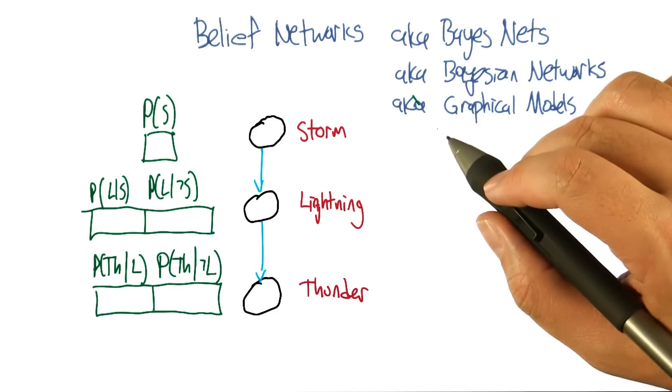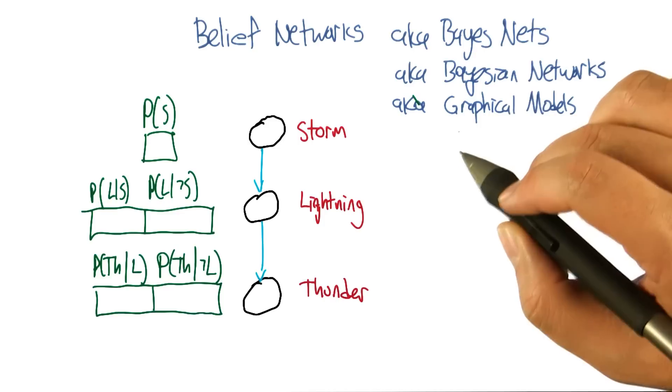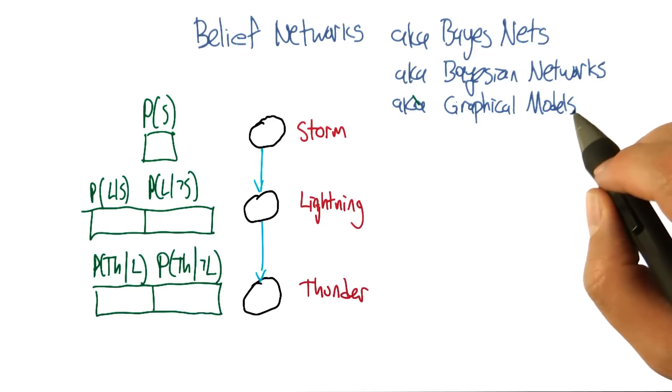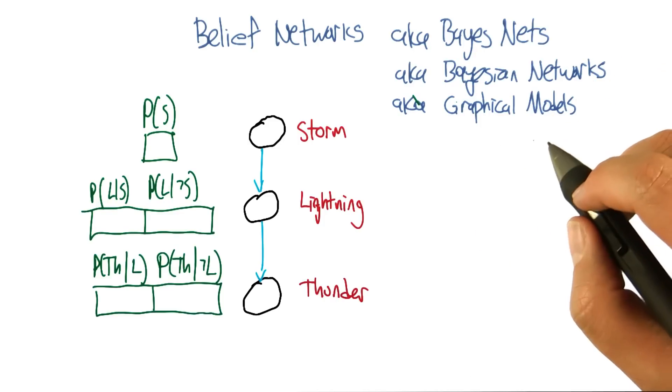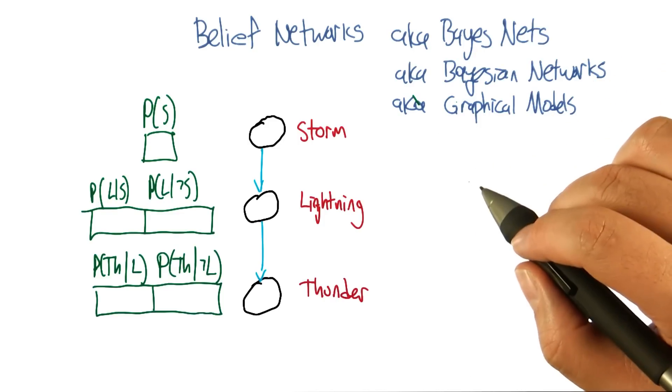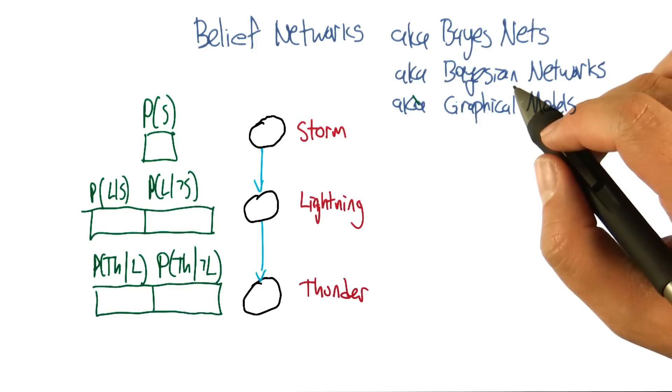So the concept of a belief network, sometimes also known as a Bayes net, sometimes also known as a Bayesian network, sometimes also known as a graphical model, and there's other names. But it's the same idea over and over again.